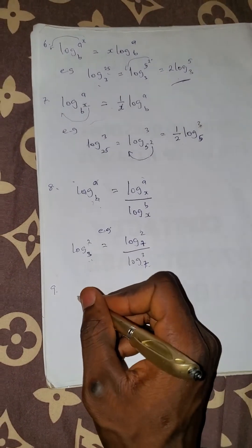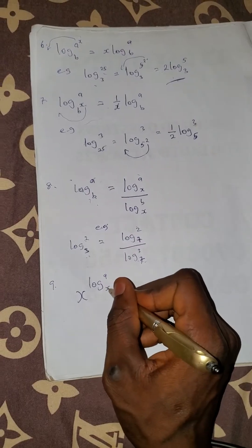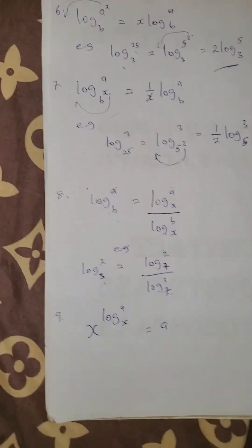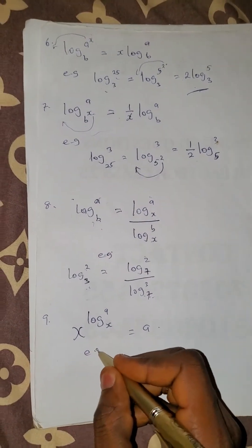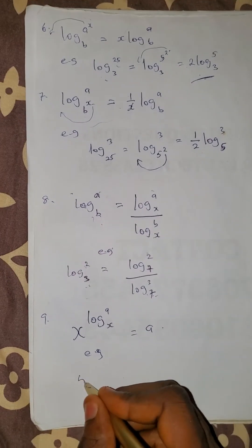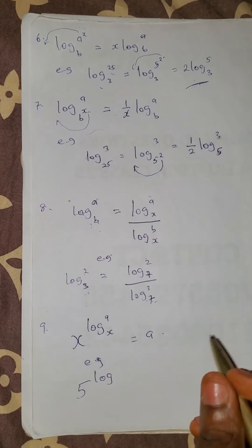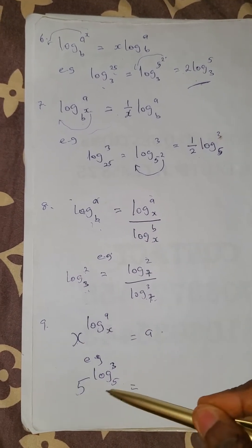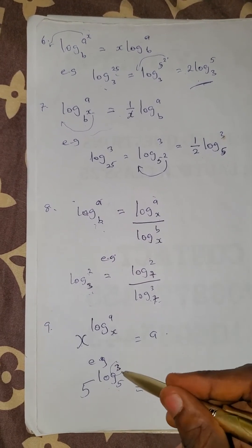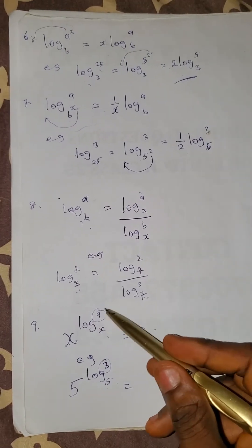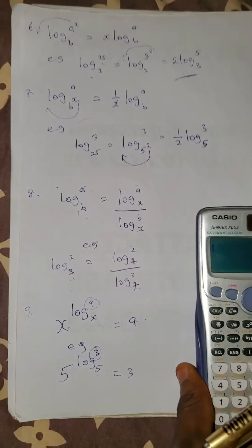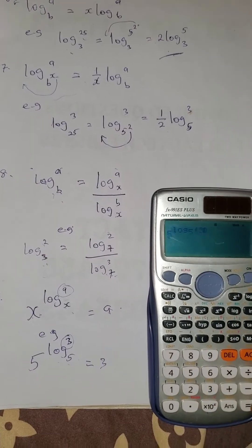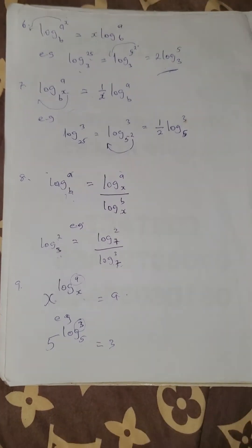Law 9: x raised to the power of log a base x equals a. So if you have 5 raised to the power of log 3 base 5, the base here is 5, which is the same as the base in the log, so the answer is simply 3. Press on the calculator: 5 raised to the power of log 3 base 5 gives 3. Correct.